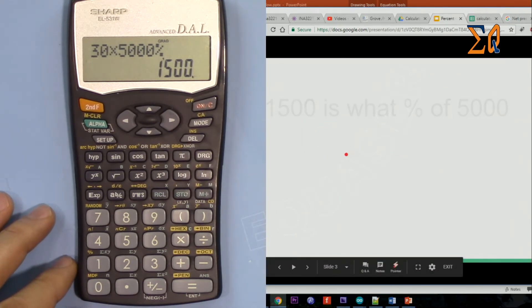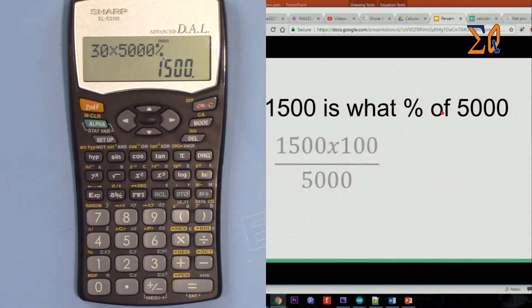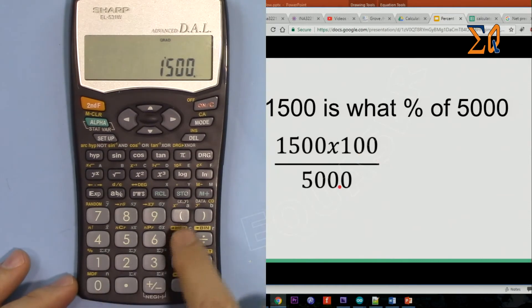1500 is what percent of 5,000? We know it's 30, but let's see how we can do it. So 1500 times 100 divided by 5,000.